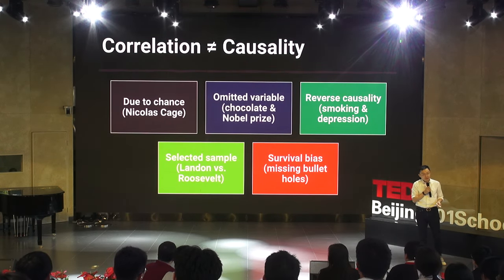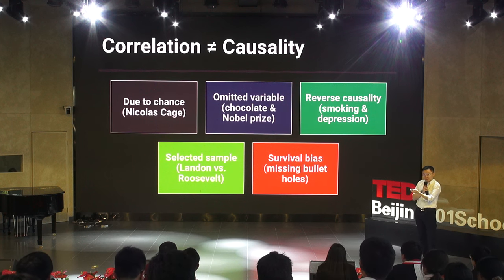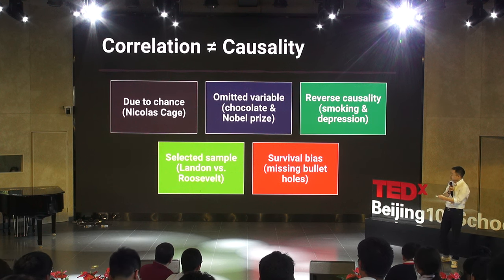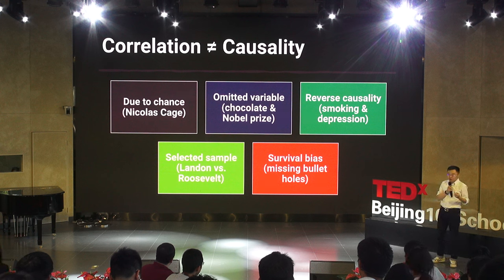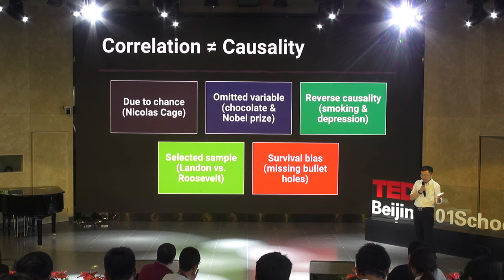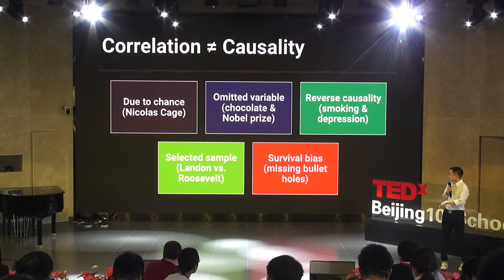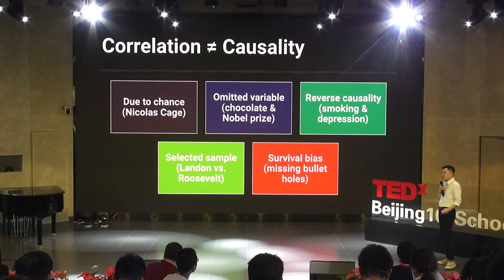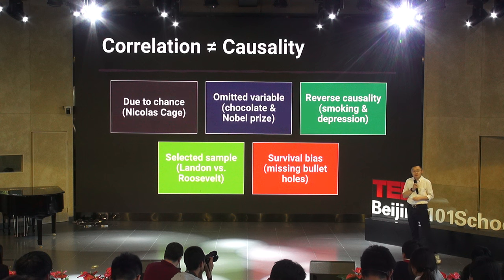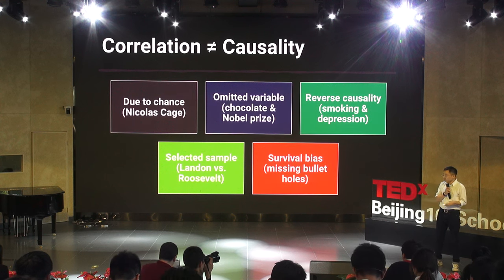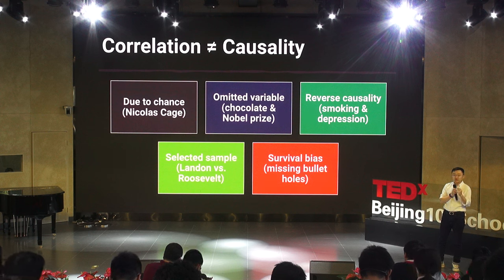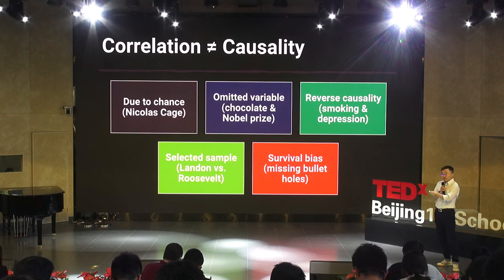So now we all know that correlation does not imply causation. They can be purely by chance, like in the Nicolas Cage example. Or they can suffer from all sorts of bias — sometimes it's because of an omitted variable we didn't consider. Sometimes we have to think about whether reverse causality is possible, like in the smoking and depression example. Sometimes we have to make sure the sample is random, not selected — if it is a selected sample, it can cause bias, like the mistake the magazine made. Or we have to think about whether what we observe are the survivors, and be careful about survivorship bias, like in the missing bullet hole example.